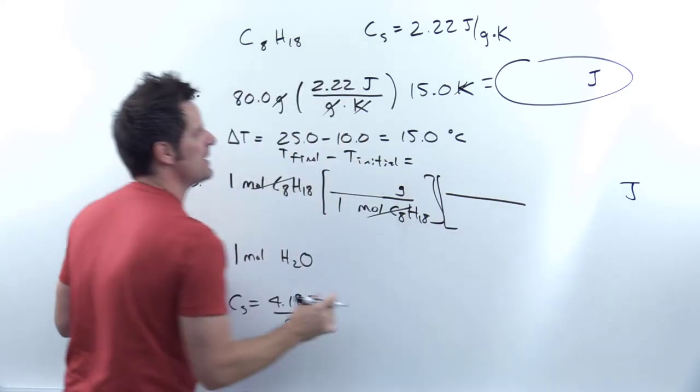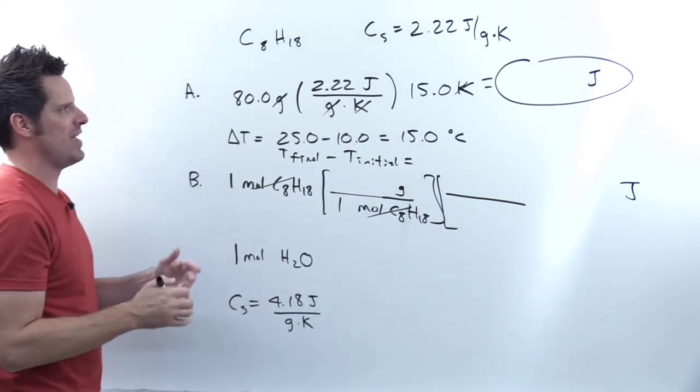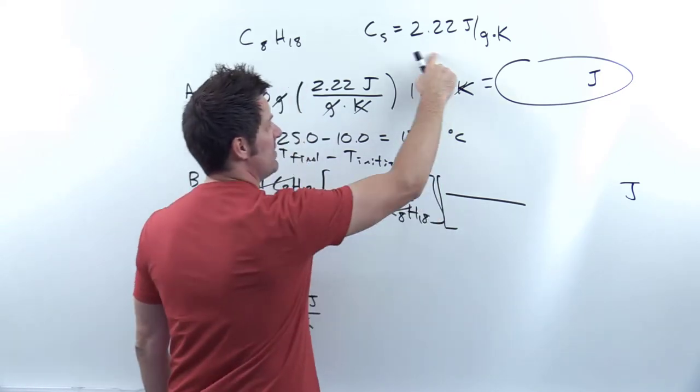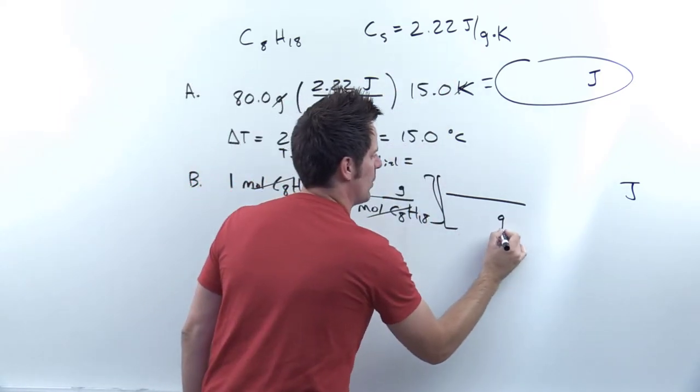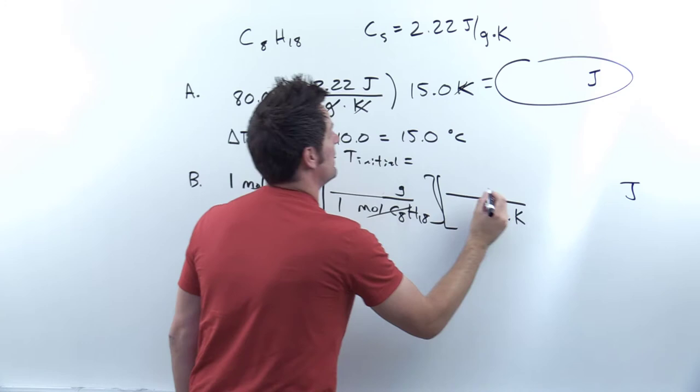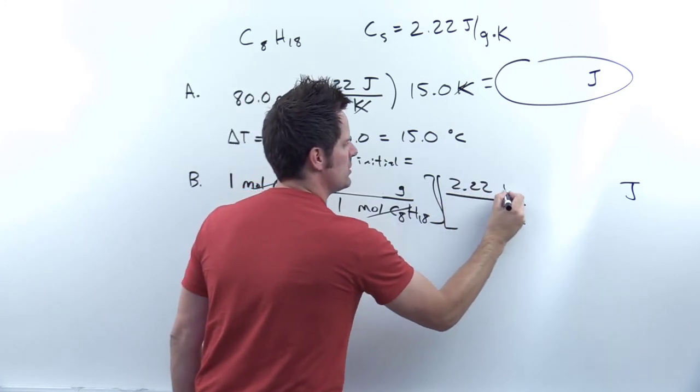Now that I have that, have I been given a value that's specific to octane that has grams in it somewhere? I have indeed. I've been given this value up here so I can put grams times Kelvins and 2.22 joules.